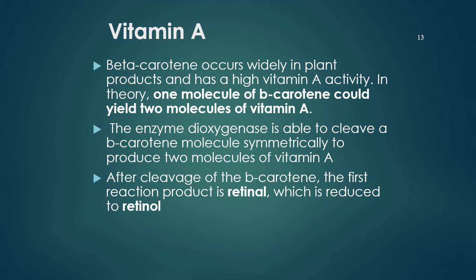Vitamin A, also known as beta-carotene, occurs widely in plant products and has high vitamin A activity. In theory, one molecule of beta-carotene will yield two molecules of vitamin A. The enzyme dioxygenase is able to cleave the beta-carotene molecule symmetrically to produce two molecules of vitamin A.